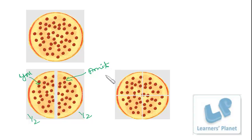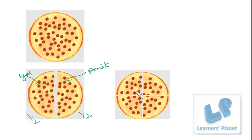Now when you started eating, you found the pizza pieces so big that you cannot hold it properly. So you tell your mama to just cut the pizza into further two pieces. So your mama cuts each piece into two more pieces. So you got four pieces of the total pizza, but you still have to eat half of the pizza.